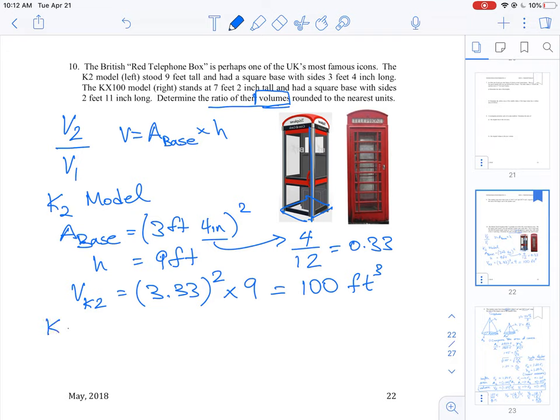Okay, then we have the KX 100 model. So this is kind of the same thing. We're going to do the area of the base, but it tells us that the area of the base has a square base with sides two feet 11 inches long. So we can do the same thing. Two feet 11 inches, and we know the height is equal to seven feet two inches.